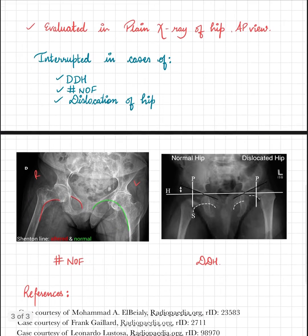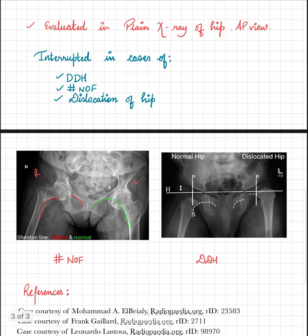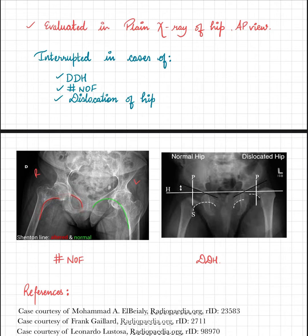In this diagram we can see that there is a fracture in the neck of the femur, and due to this fracture, the Shenton's line is broken on the right side while it is continuous on the left side.